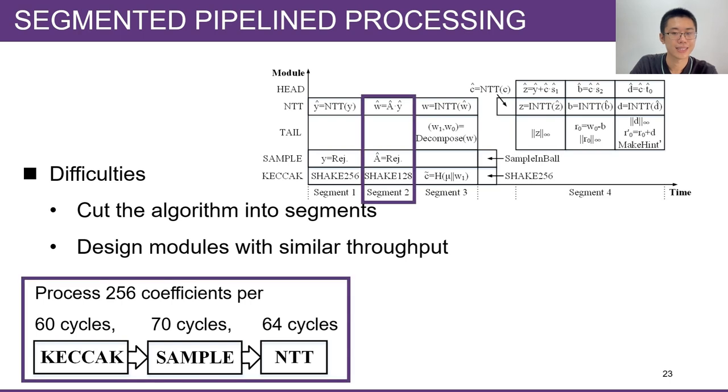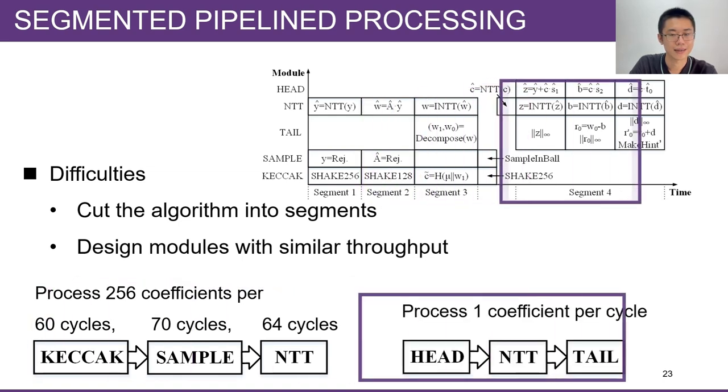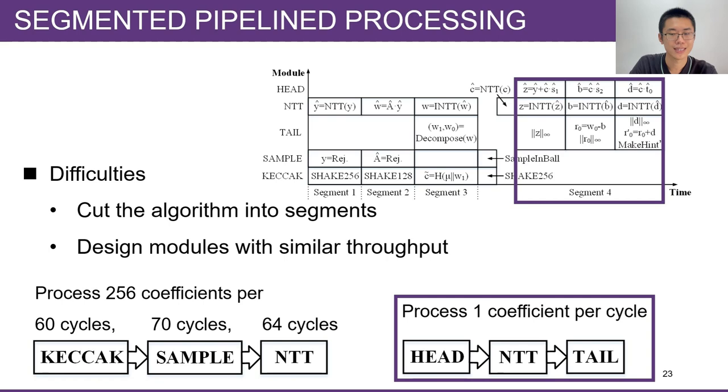For the second segment, the Keccak module can process 256 coefficients per 60 cycles, the Sample module per 70 cycles, and the NTT module per 64 cycles. For the fourth segment, the HEAD module, the NTT module, and the TAIL module all process one coefficient per cycle. By carefully cutting the algorithm into segments and designing modules with similar throughput, we can achieve high utilization of the modules and thus improve the efficiency of our architecture.